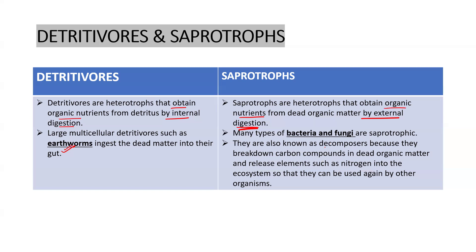Saprotrophs are also known as decomposers because they break down organic compounds and release minerals so that nature can use them again. Examples of saprotrophs are bacteria and fungus.